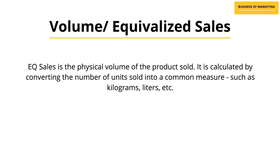The third measure is volume sales, or equalized sales. This is a measure which is often confused with unit sales. Unit sales refers to the total number of units sold, whereas volume or equalized sales refers to the physical volume of product that is sold. It is calculated by converting the number of units sold into a common measure such as kilograms or liters, or anything else relevant to that category.